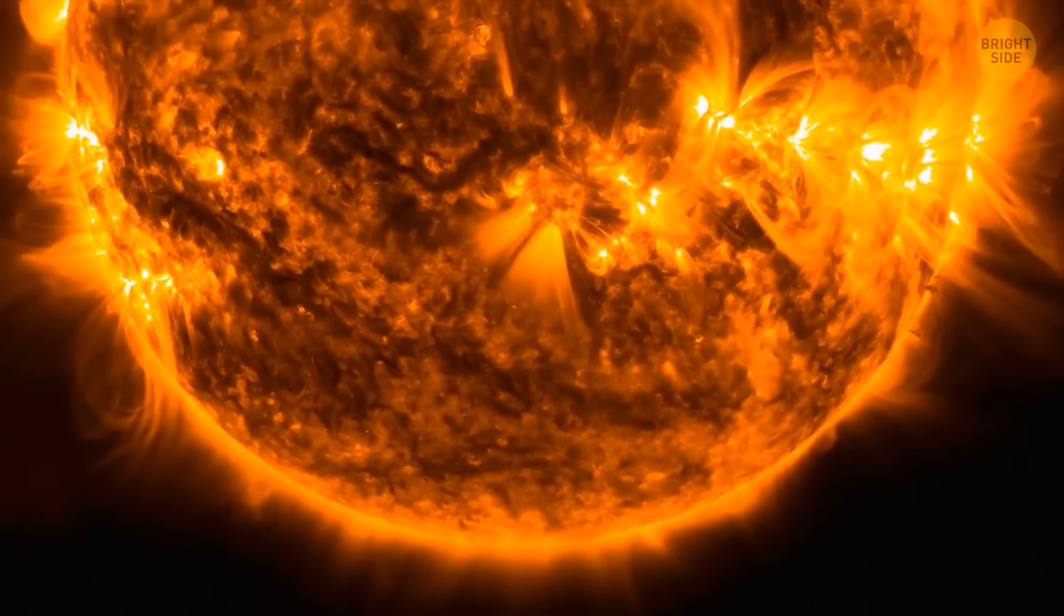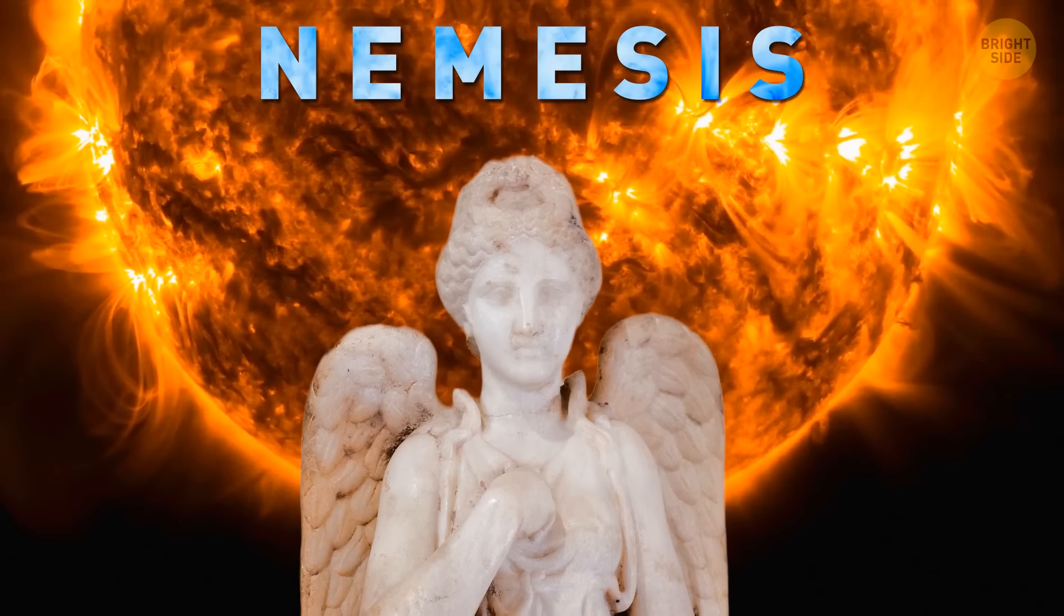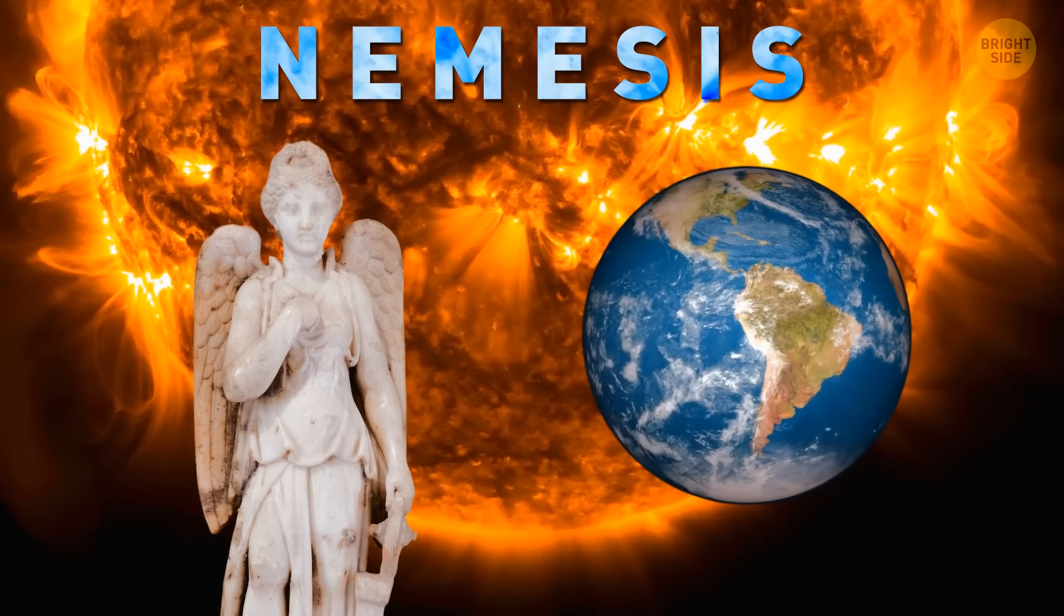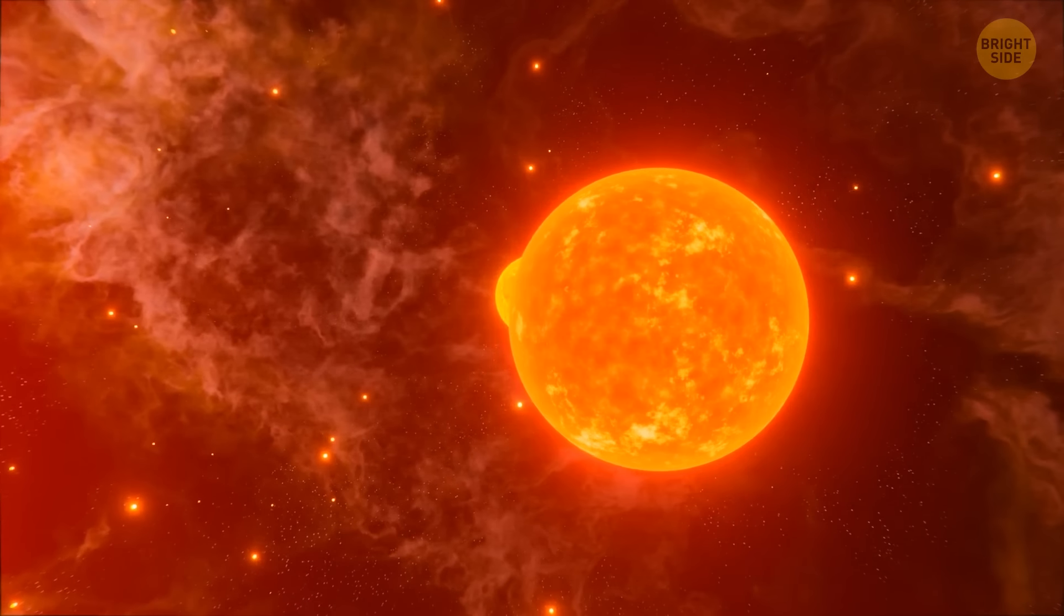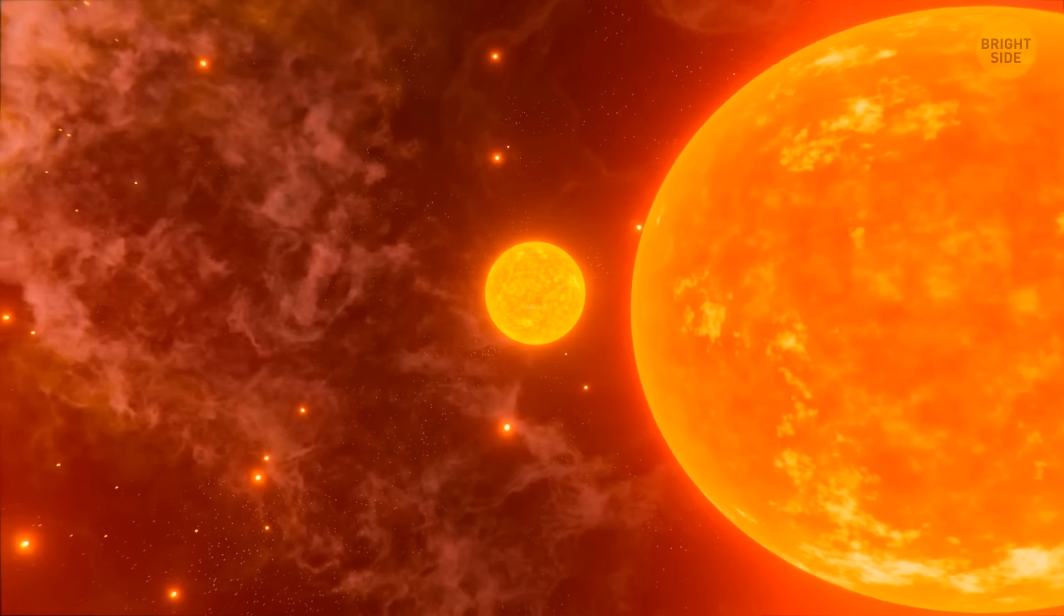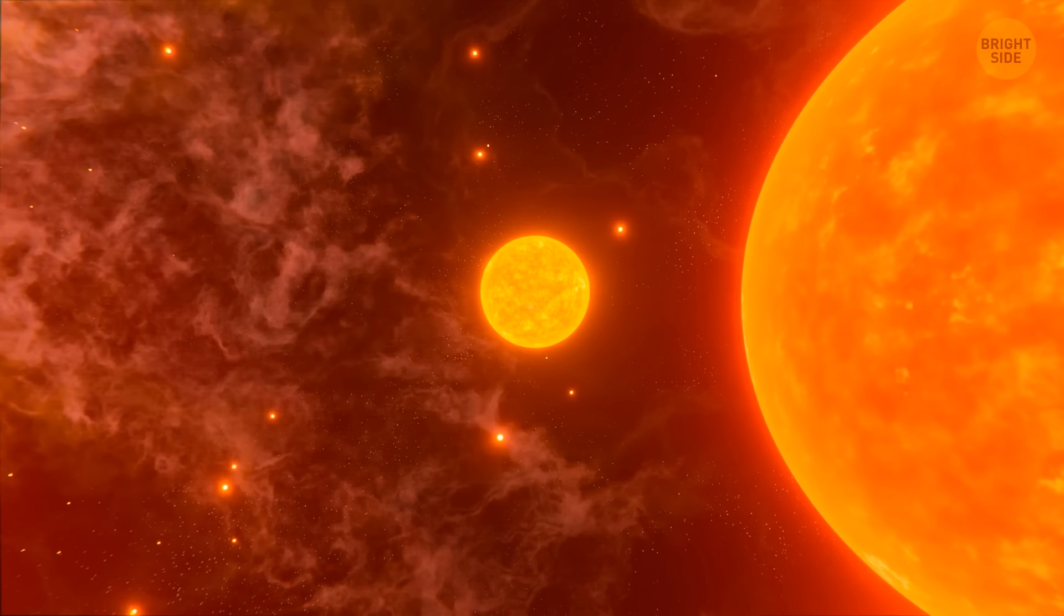This hypothetical star was named Nemesis. It's the name of the ancient Greek deity of retribution. What is it taking revenge on us for? No idea. Perhaps it didn't like the fact that, once upon a time, the Sun took away almost all the dust and gas from a molecular cloud. The Sun became a fairly large star, but the twin remained dark and small.